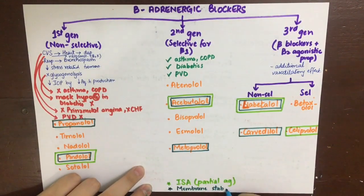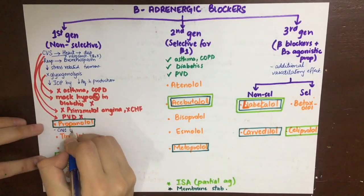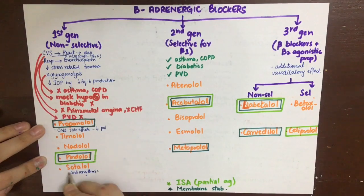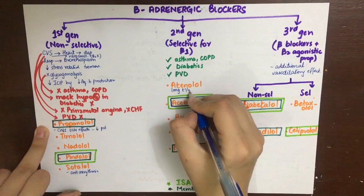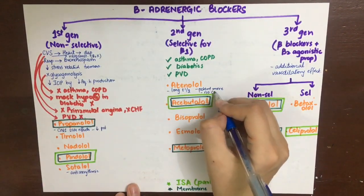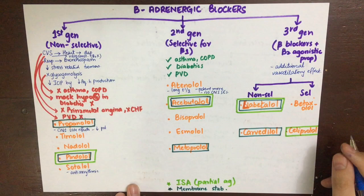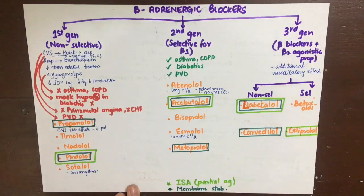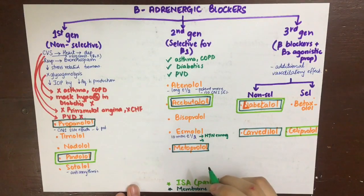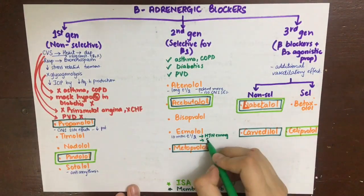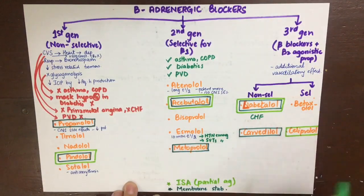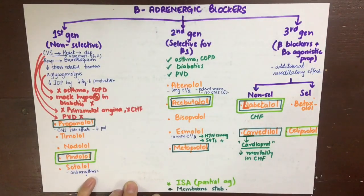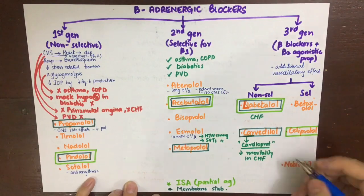For specific drug properties: propranolol causes CNS depression and should not be combined with CNS depressants such as benzodiazepines, alcohol, or antihistamines. Sotalol is used as an antiarrhythmic. Atenolol has a long half-life, is more potent than propranolol, and causes no CNS depression. Esmolol is very short-acting (about 10 minutes) and is used in hypertensive emergencies and supraventricular tachycardia emergencies. Labetalol is preferred in congestive heart failure.